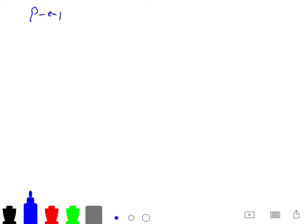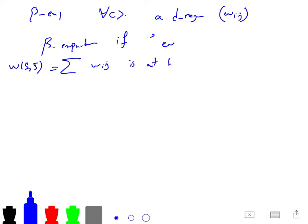So the definition of beta expander is that for any d-regular weighted graph omega_ij, is a beta expander if every set of nodes S, w_ij, which is w of S and S bar, this is at least beta d|S|. And its conductance is at least beta.